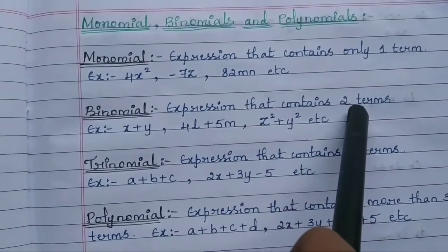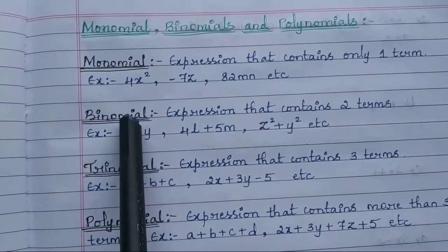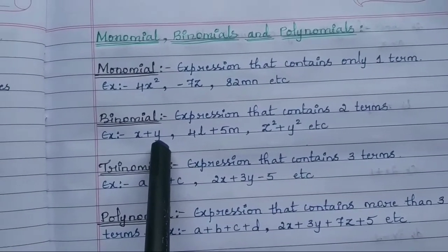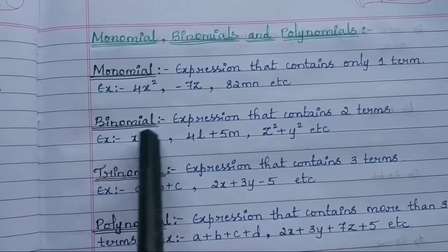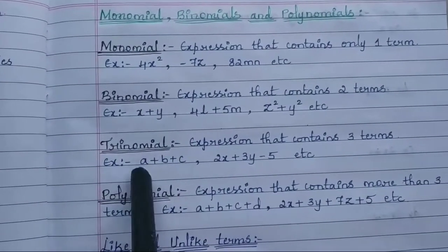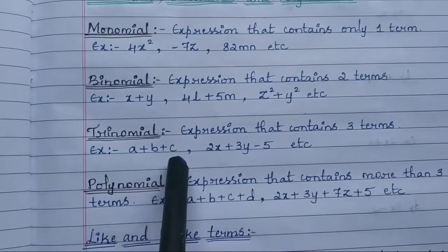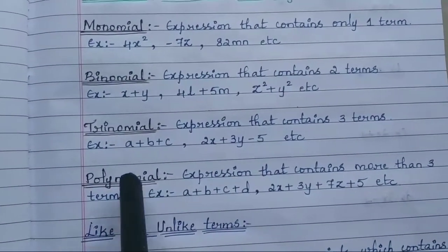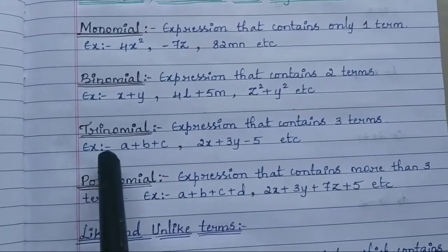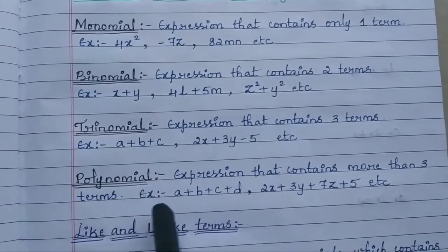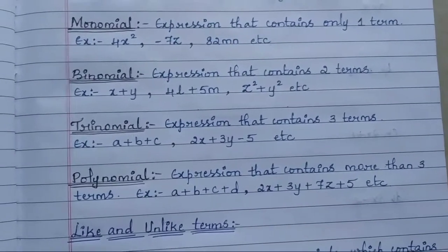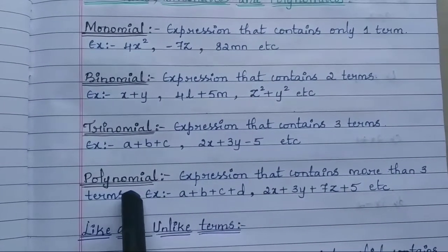An expression that contains two terms is known as a binomial — for example, x + y, 4x + 5m, or z² + y². A trinomial contains three terms. A polynomial contains more than three terms — for example, a + b + c + d, or 2x + 3y + 7z + 5.